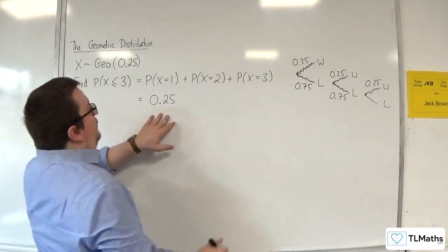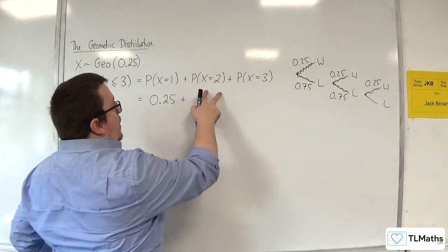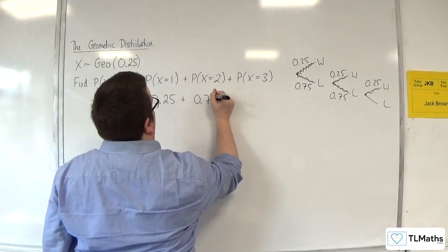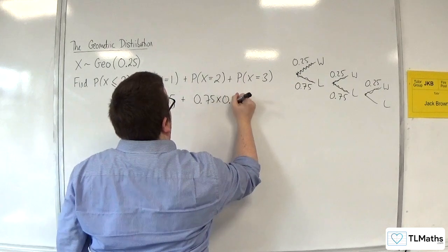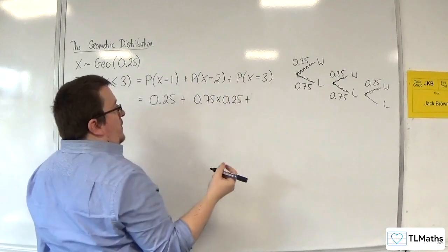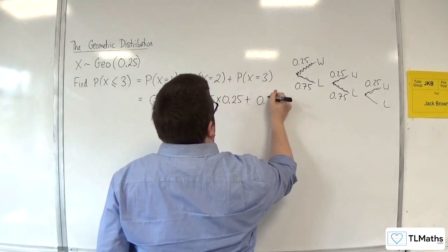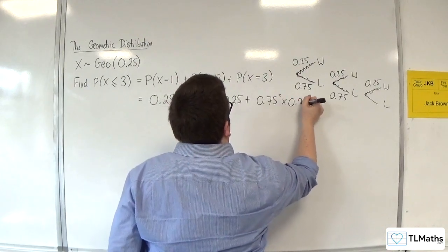So I've got 0.25 plus the probability of winning on the second attempt is 0.75 times 0.25. And the probability of winning on the third attempt is 0.75 squared times 0.25.